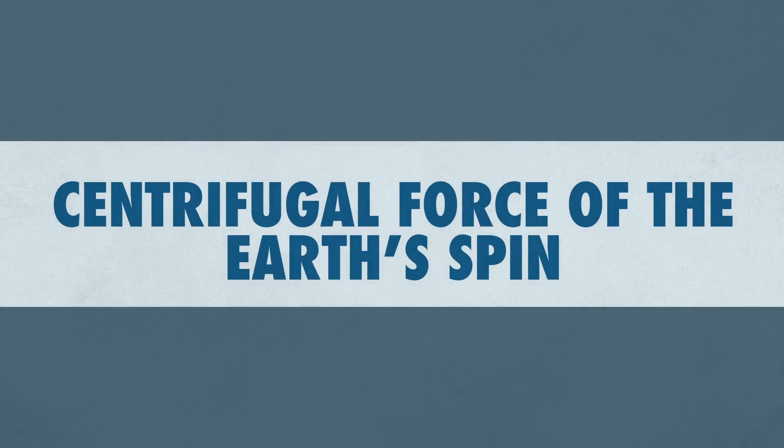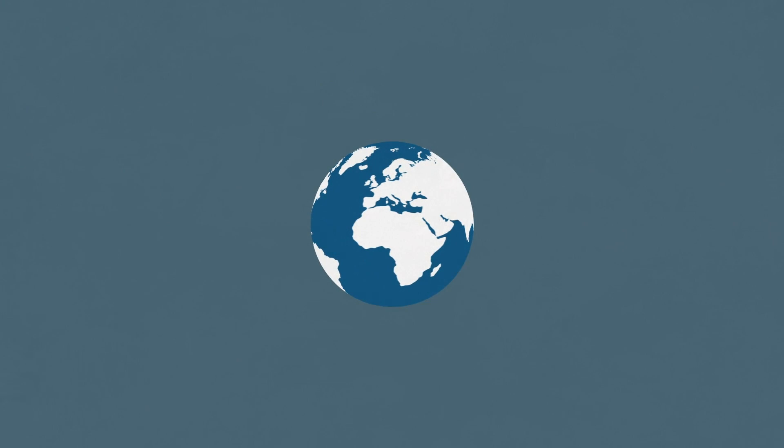The centrifugal force of the Earth's spin is the reason why the oceans remain spread across the globe. Without it, all the water would congregate at two massive oceans at the poles. Antarctica would be fully submerged, as well as everywhere lying north of Spain.